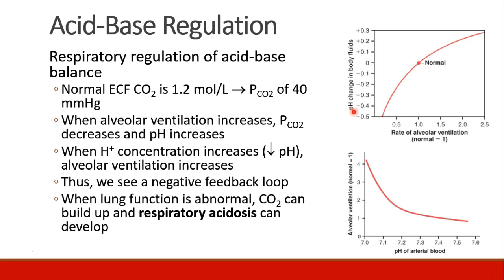Now let's start talking about the respiratory regulation of your acid-base balance. In your extracellular fluid, normally your carbon dioxide exists at about 1.2 moles per liter, which corresponds to a pCO2 of 40 millimeters of mercury. As your alveolar ventilation increases, pCO2 decreases and pH increases. On the other hand, when hydrogen ion concentration increases — that is the pH goes down and the system becomes more acidotic — alveolar ventilation increases in order to decrease pCO2. So we see a negative feedback loop here.